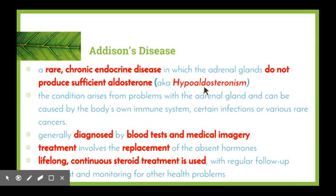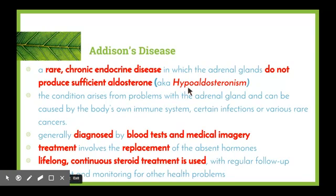The syllabus also requires us to look at hormone replacement therapy for patients who cannot secrete enough aldosterone. This is known as Addison's disease — a rare chronic endocrine disease in which the adrenal glands do not produce sufficient aldosterone, sometimes also referred to as hypoaldosteronism. The condition arises from problems with the adrenal gland and can be caused by the body's own immune system attacking the adrenal glands, certain infections, or various cancers.